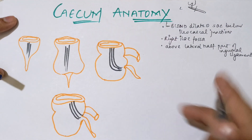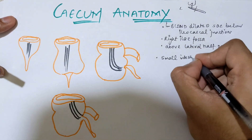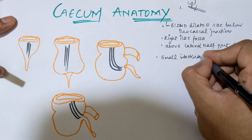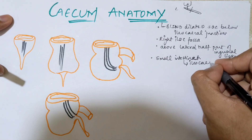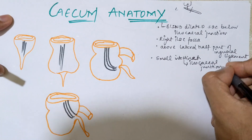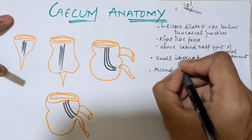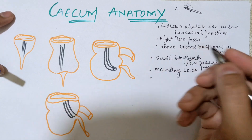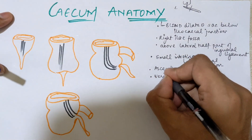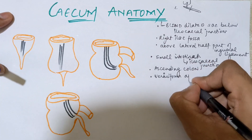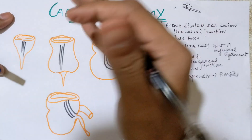The cecum has connections with three structures. First, with the small intestine via the ileocecal junction — specifically the terminal part of the ileum connects to the cecum. Second, above the cecum, we have the ascending colon, where the colon begins. Third, on the posterior medial side, there is a connection with the vermiform appendix.